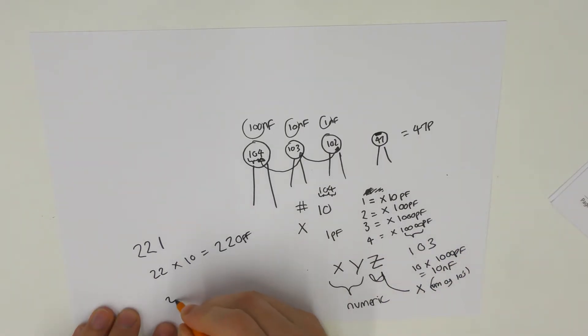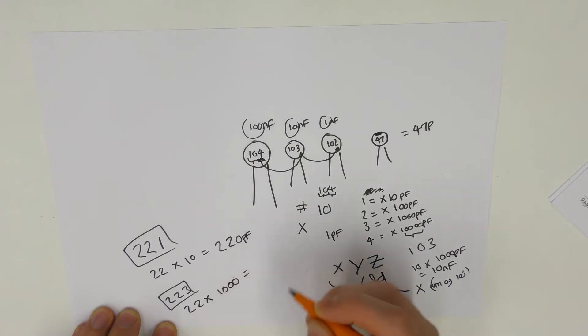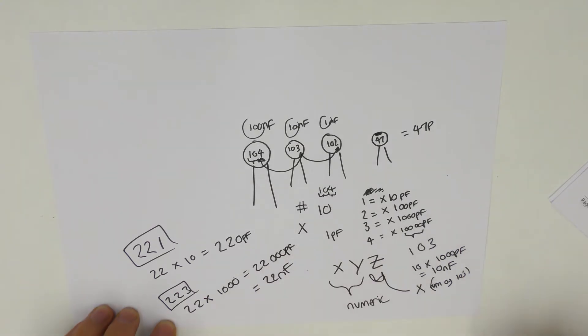If this was 2, 2, 3, then it would be 22 multiplied by, it looks like a divide, let's just box those. It would be 22 times by 1, 2, 3, so it would be 22,000 picofarads, otherwise known as 22 nanofarads.